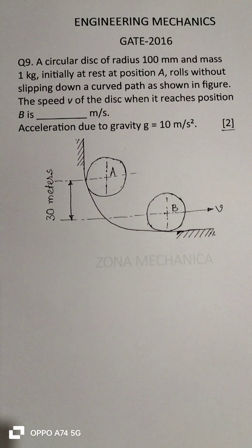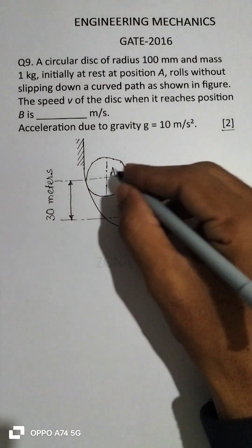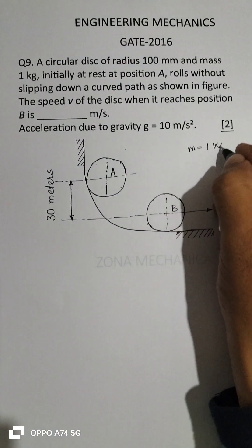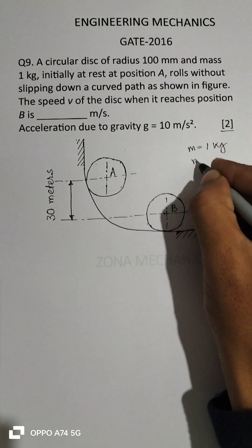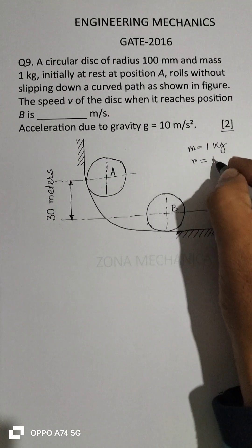We can solve this question by energy balance. Let the mass of the disk be m, which is equal to 1 kg, and radius be r, which is equal to 100 mm.